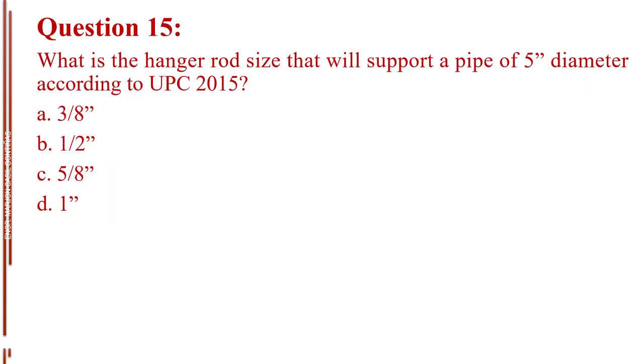Question number 15. What is the hanger rod size that will support a pipe of 5 inch diameter according to UPC 2015? Letter A, 3 eighths inch. Letter B, half an inch. Letter C, 5 eighths inch. Letter D, 1 inch. The answer is Letter B, half an inch.